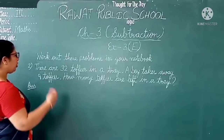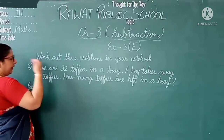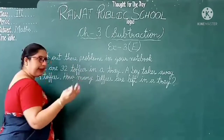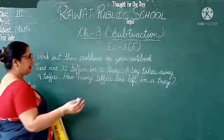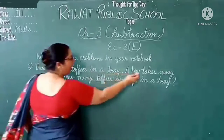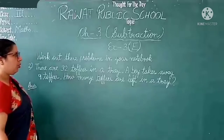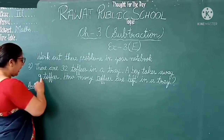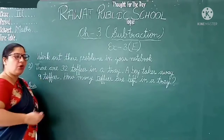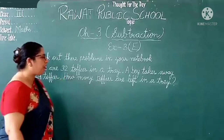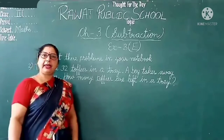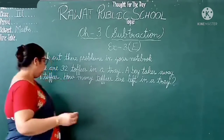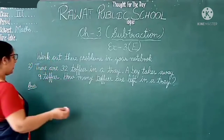Now question number 2: there are 32 toffees in a tray. A boy takes away 9 toffees. So how many toffees are left in the tray?